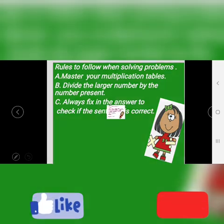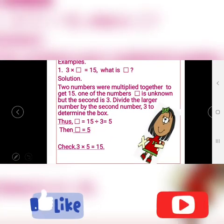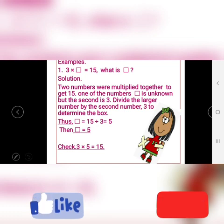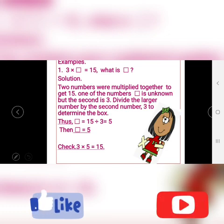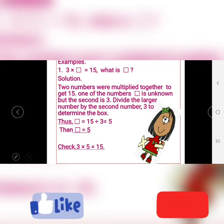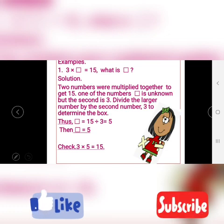Let's see some examples. We have 3 multiplied by box equals 15. What is box? Two numbers were multiplied together to get 15. One of the numbers is known, the other — box — is unknown. The second known number is 3.